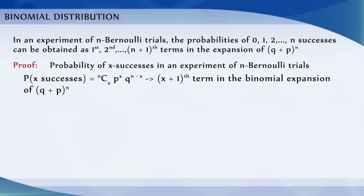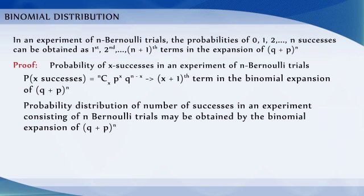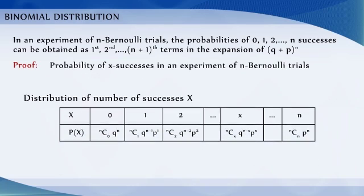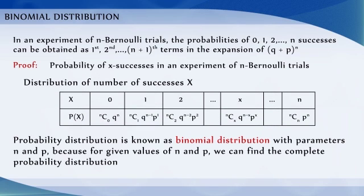Clearly, the probability of x successes is the (x+1)th term in the binomial expansion of (q+p)ⁿ. Therefore, the probability distribution of number of successes in an experiment consisting of n Bernoulli trials is obtained by the binomial expansion of (q+p)ⁿ. This distribution of number of successes x can be written in tabular form. The given probability distribution is known as binomial distribution with parameters n and p, because for given values of n and p, we can find the complete probability distribution.